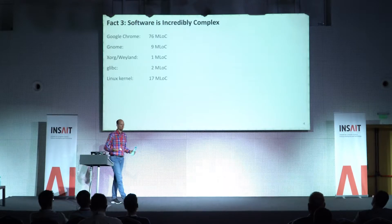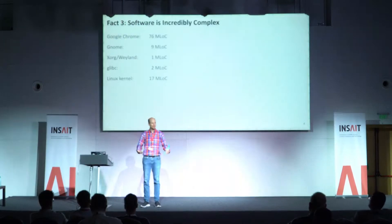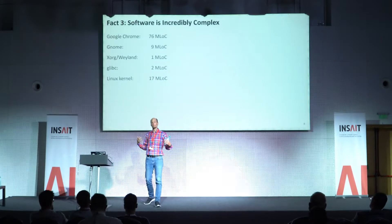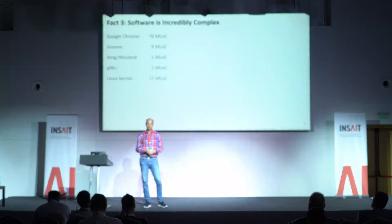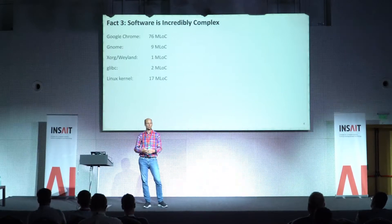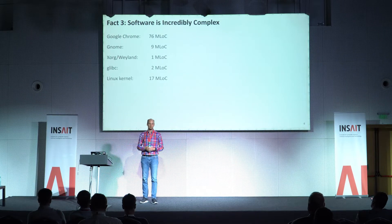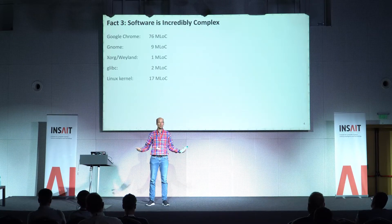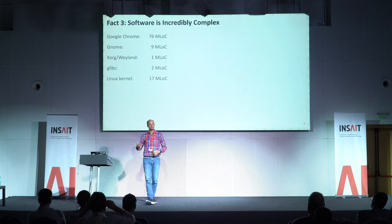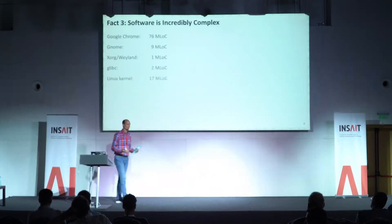One of the issues we are facing — we've heard in previous talks about formal verification and analysis. The problem on the software I'm looking at is that software is incredibly complex. If you look at Google Chrome, one of the most common browsers out there, just the system itself has 76 million lines of code. Your visual graphical user interface runtime system adds another 20 to 25 million lines of code. Together with the kernel, another 70 million lines of code. This is a massive amount of complexity.